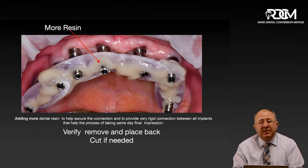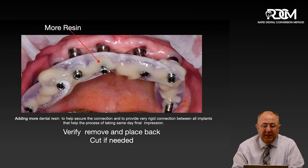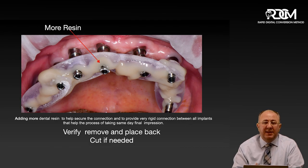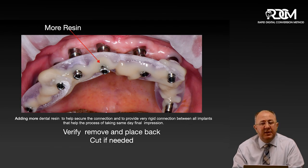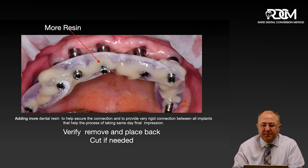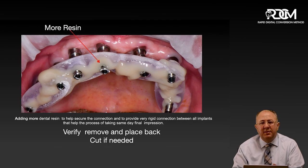The next step is to add more resin to the connection to confirm it is really stable. Then I take the device out, unscrew it, look from inside, and add more resin on the inside to eliminate any voids and prevent any movement. Then I put this instant verification jig back in place. You can tell it is passive when seated — you can feel it with an explorer and have access to all the connections. If the verification jig is rocking or not stable, you can cut the resin and add resin back to it, the same way you would with a standard verification jig.